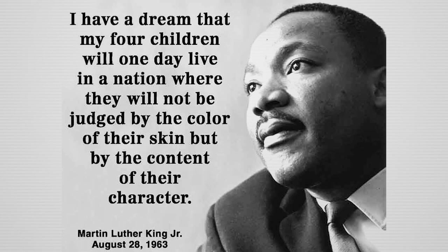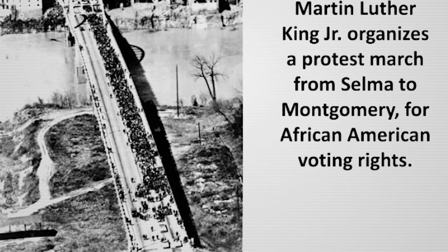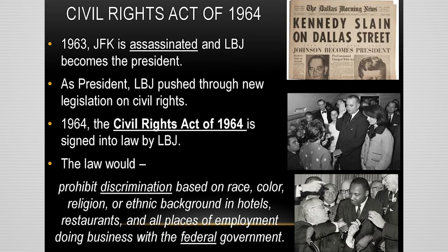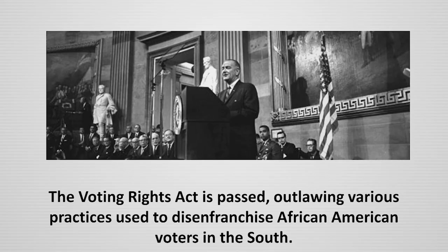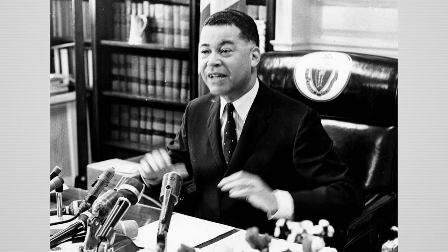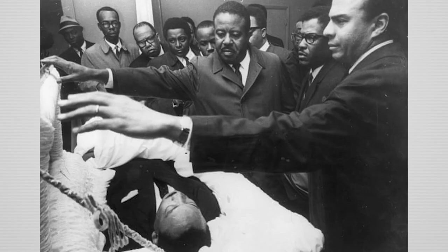In 1957, Martin Luther King Jr. and others set up the Southern Christian Leadership Conference, a leading engine of the Civil Rights Movement. In 1964, the Civil Rights Act is signed, prohibiting discrimination of all kinds. In 1965, the Voting Rights Act is passed, outlawing practices used in the south to disenfranchise African-American voters. In 1967, Edward W. Brooke became the first African-American U.S. Senator since Reconstruction, serving two terms as a senator from Massachusetts.